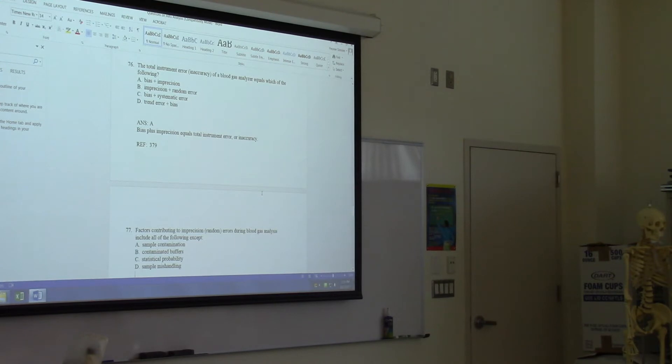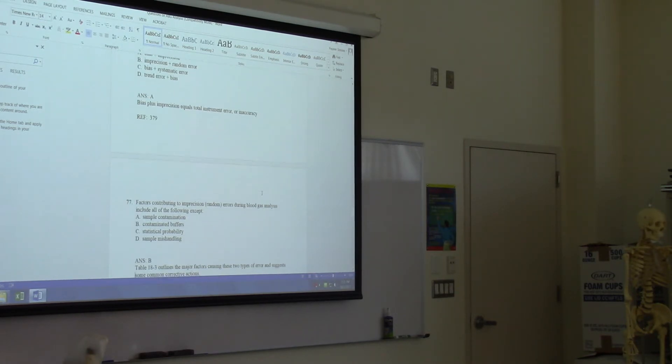Factors contributing to imprecision or random errors during blood gas analysis include all of the following except. I guess statistical probability is the only one I don't recognize, because you can contaminate a sample with liquid heparin or with an air bubble, if the buffers are contaminated, or if you don't handle the sample correctly. So I'm saying C.